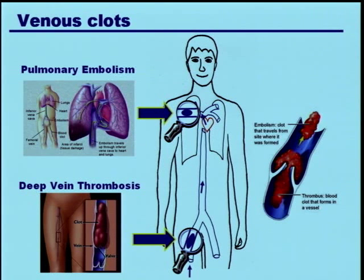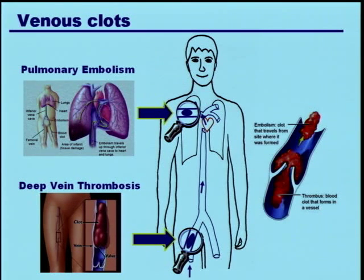To illustrate further: a deep vein thrombosis — this cartoon shows a big clot in the femoral vein. If part of that breaks loose and embolizes into the lung, you get a pulmonary embolism.